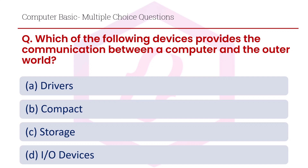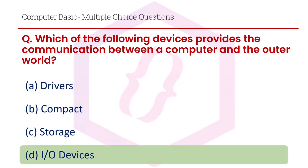Which of the following device provides the communication between a computer and the user? The right answer is option D, I/O devices.